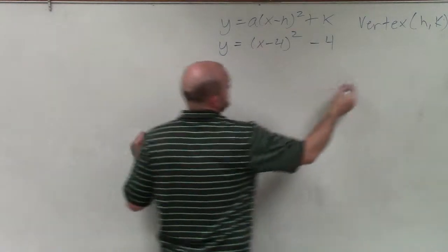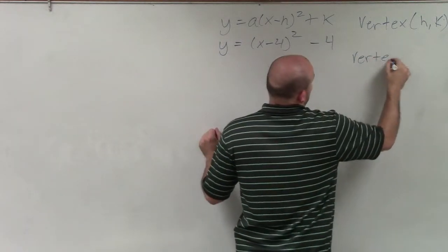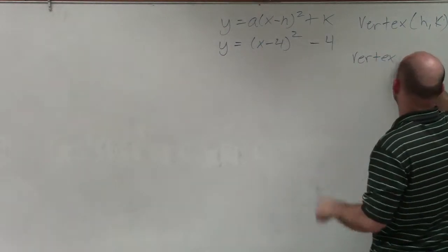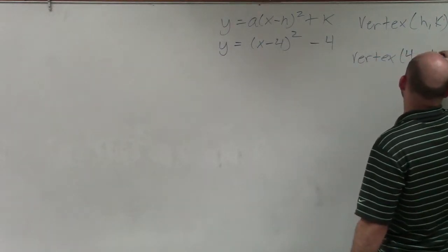So therefore, my vertex for this problem is going to be the opposite of negative 4, which will be 4, comma, negative 4.